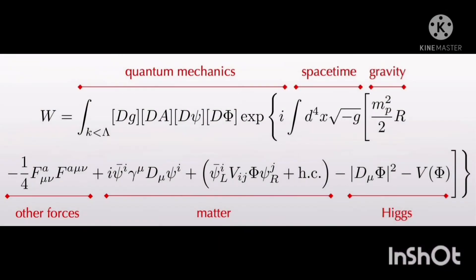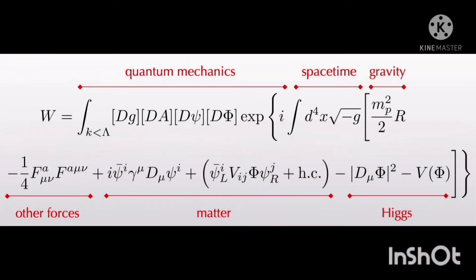So let's get into some of the terms that are involved in this equation. This equation quantifies the amplitude to undergo a transition from one configuration to another in the path integral formalism of quantum mechanics within the framework of quantum field theory with field content and dynamics described by general relativity for gravity and the standard model of particle physics for everything else.